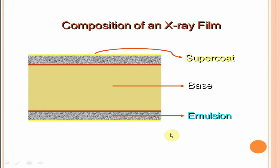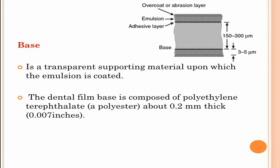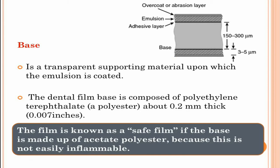First is the base, a transparent supporting material upon which the emulsion is coated. The dental film base is composed of polyethylene terephthalate about 0.2 mm thick or 0.007 inches. For optimal viewing of diagnostic detail, the film base should have a bluish tint and be uniformly translucent, casting no pattern on the resultant radiograph. The film is known as a safe film if the base is made of acetate polyester because it is not easily inflammable.